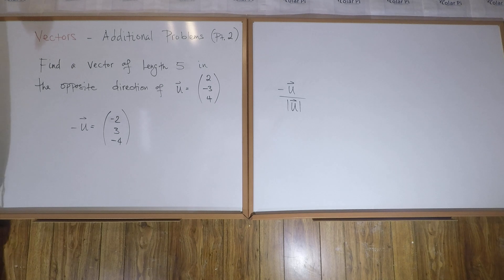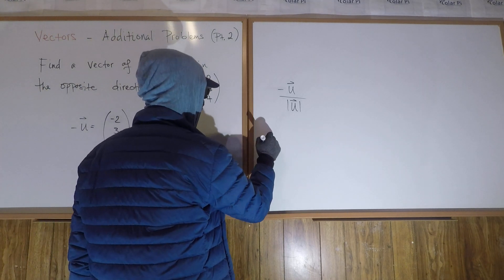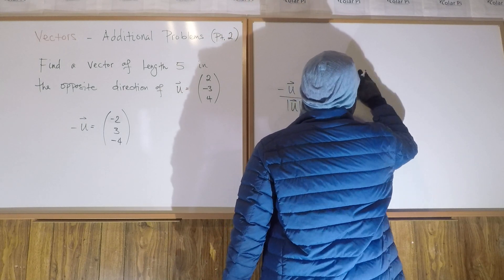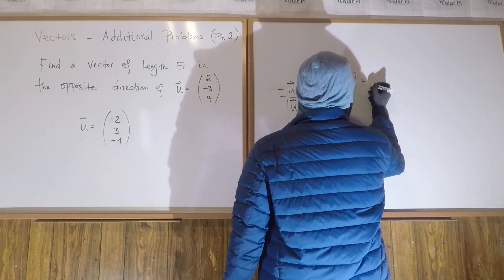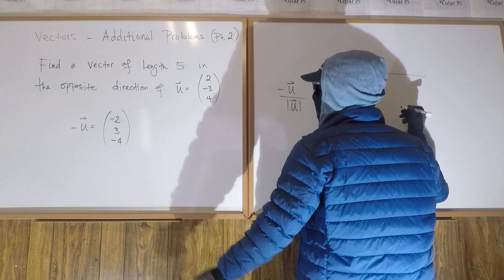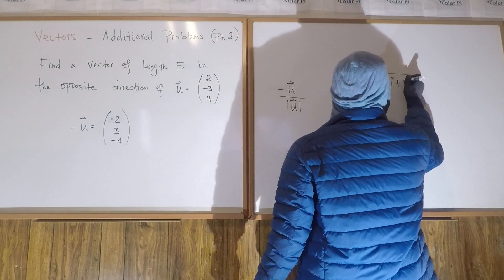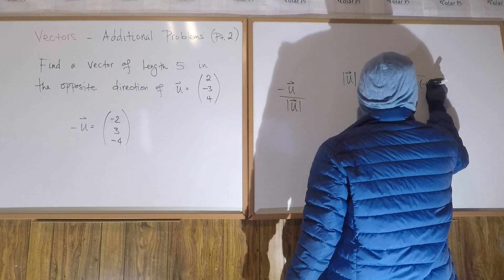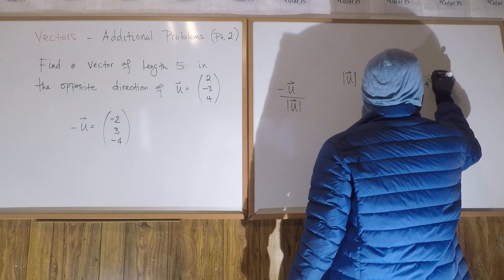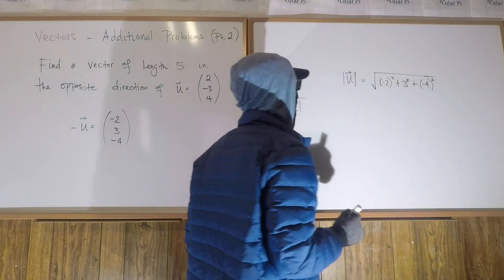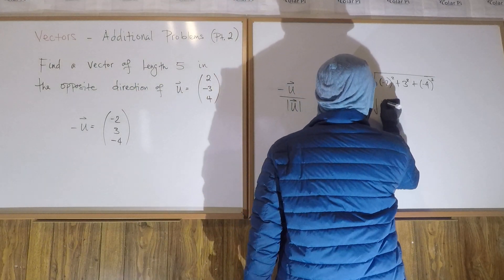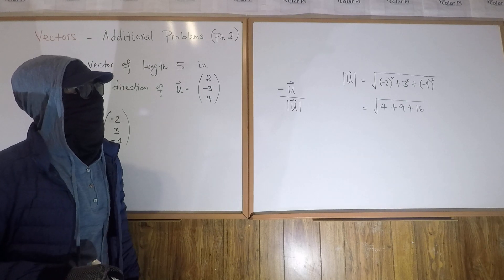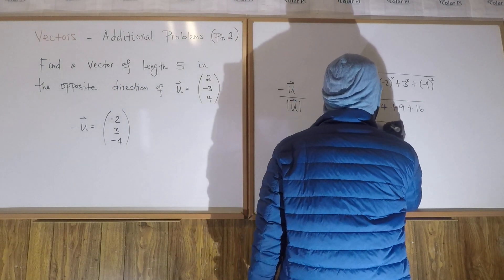Now how do we find the length of a vector in 3D? Turns out it's not very hard. The length of vector u is going to be equal to the square root of: the x-component squared — in this case (-2)² — plus the y-component squared, that's 3², plus (-4)². So that's going to equal the square root of 4 plus 9 plus 16. Now 9 plus 16 is 25, plus 4 is 29, so it's the square root of 29.